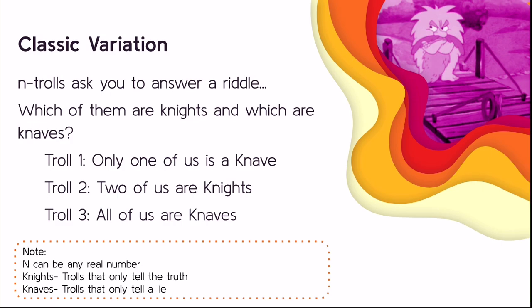In this example, troll one says 'only one of us is a knave,' troll two says 'two of us are knights,' and troll three says 'all of us are knaves.' Which of them are knights and which are knaves?